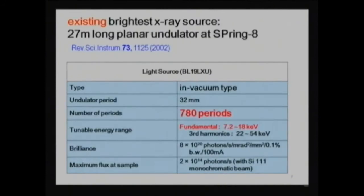Therefore, we are utilizing a 27-meter-long planar undulator at Spring-8, where the number of undulator periods is 780, so the photon flux is almost 1,000 times stronger. Without using this, one cannot do high-resolution photoelectron spectroscopy. The details of this beamline are given in the literature.